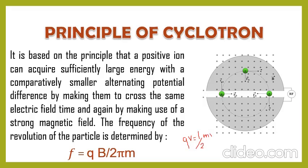½mv² is kinetic energy. In each encounter, if a particle encounters the electric field for the first time it gains energy qV, where V is the applied voltage, q is the charge, v is the velocity, and m is the mass. If it encounters a second time it gains 2qV; a third time it gains 3qV. So as the count increases, the velocity also increases, meaning the particle is accelerating.